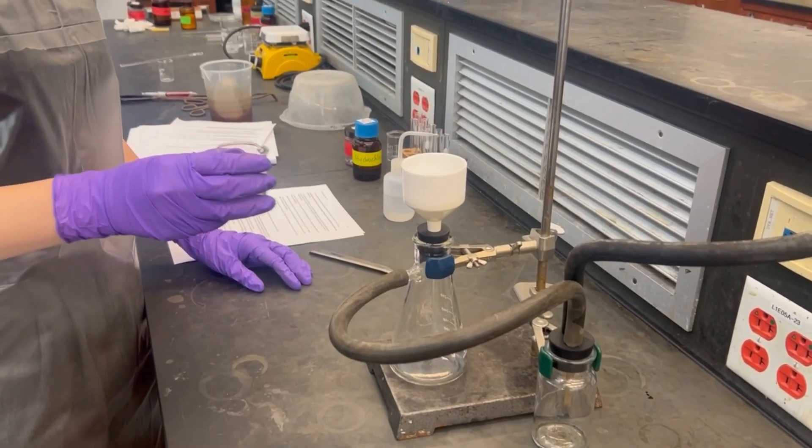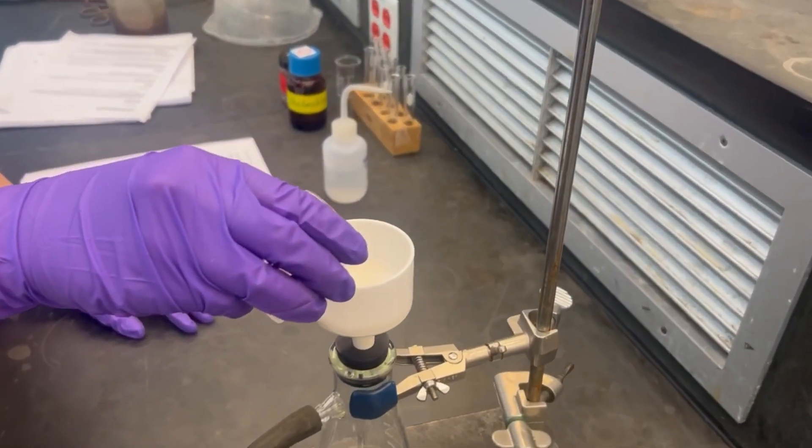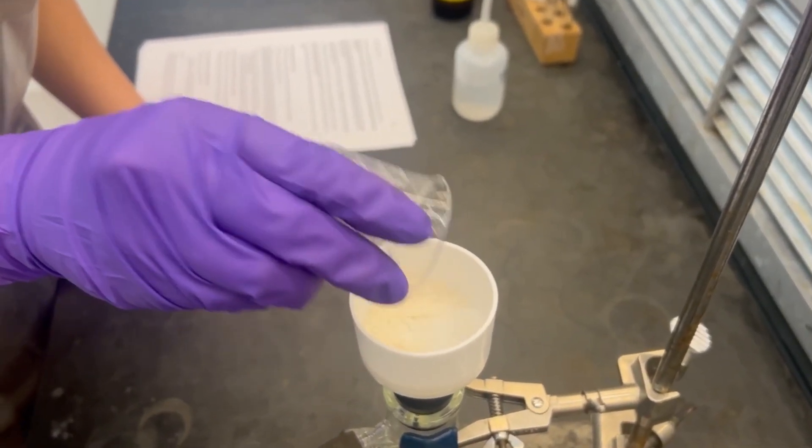Assemble a vacuum filtration setup and place the filter in. Pour the solution from the beaker into the center of the filter paper and make sure to transfer all the solids into the funnel.